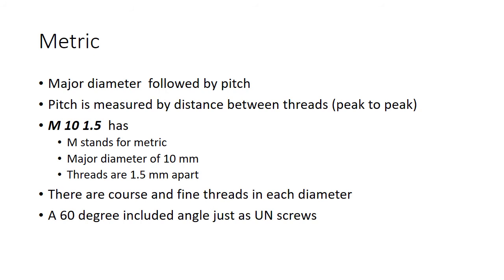Now metric screws — they're easier to understand once you understand the Unified National System. With metric, you have your major diameter and then the pitch. An M10 × 1.5 has a diameter of 10 millimeters and the threads are 1.5 millimeters apart. Just as with American standards, metric screws have coarse and fine threads within each diameter, and they use 60-degree angles.